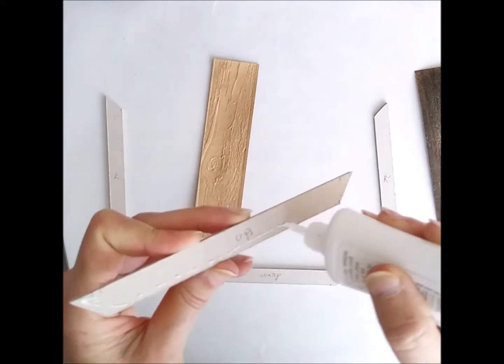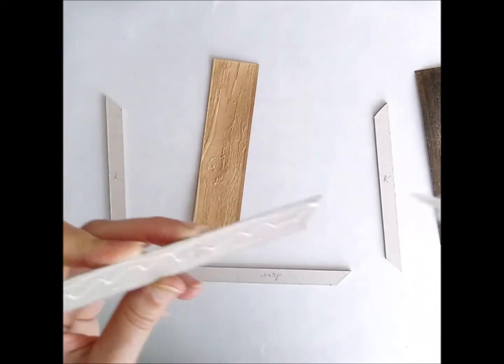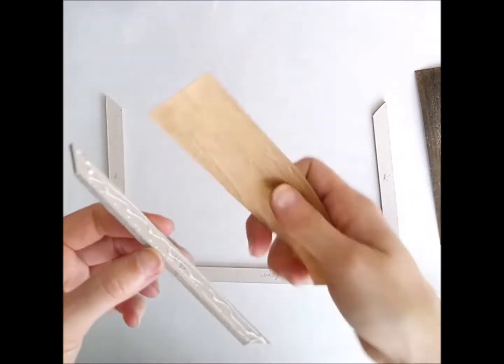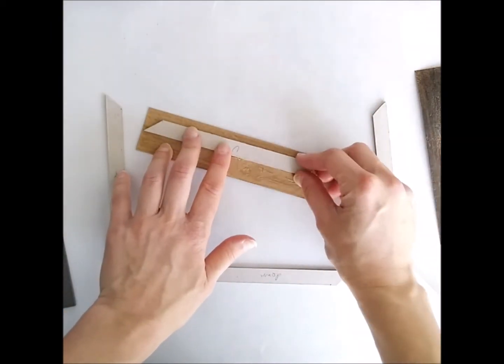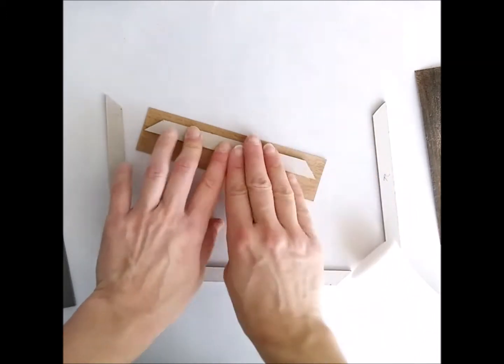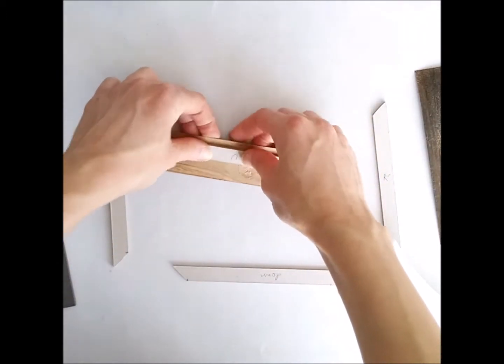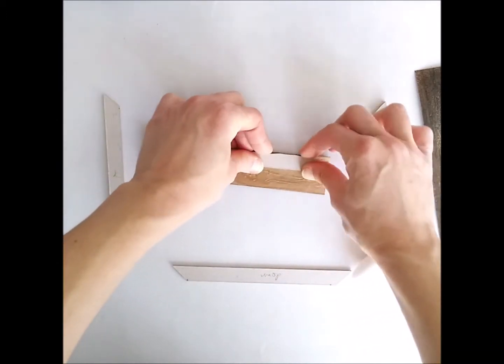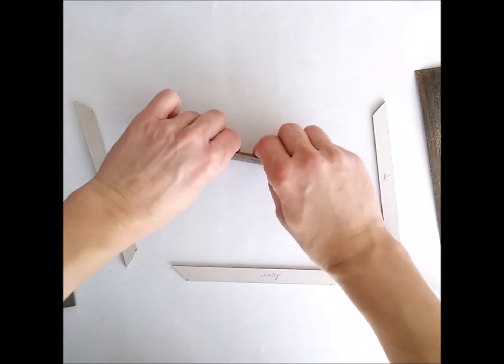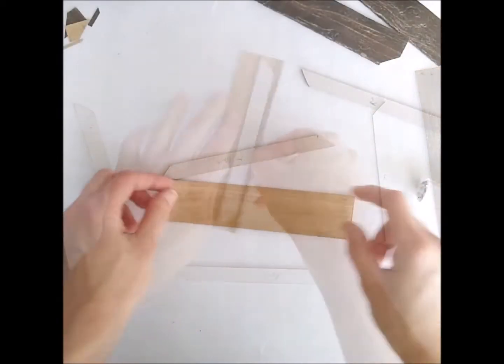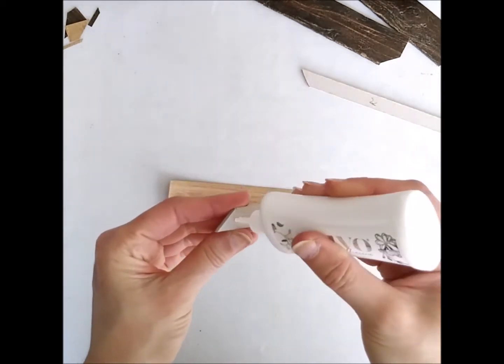Now, in this part of the project, I'm using the Nouveau Deluxe adhesive by Tonic Studios. And the reason I chose this glue, aside from it being very strong, is that it dries quite fast but not super fast. So it gives me a lot of wiggle room, which was very important for me in this case because I want to make sure I fit everything together and be able to kind of fix mistakes.